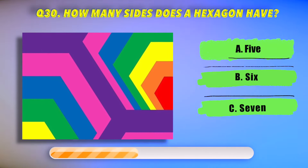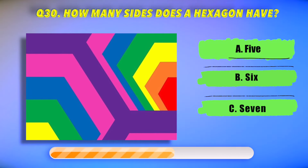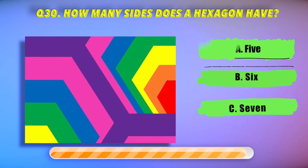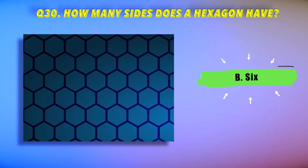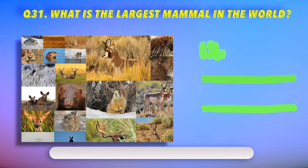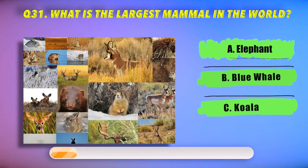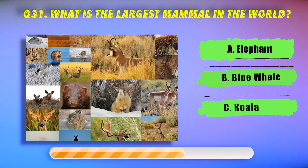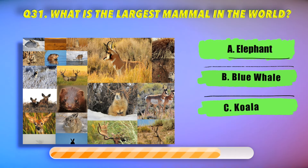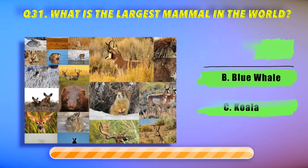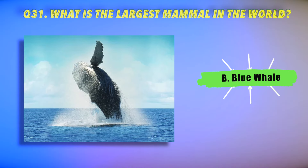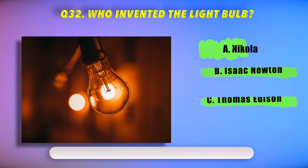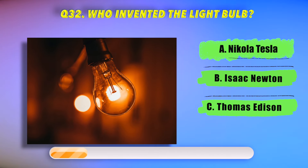How many sides does a hexagon have? What is the largest mammal in the world? Question 32: Who invented the light bulb?